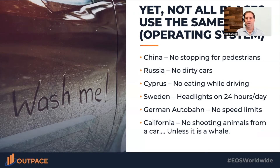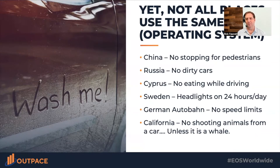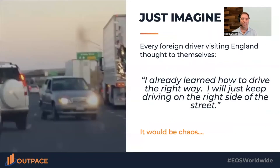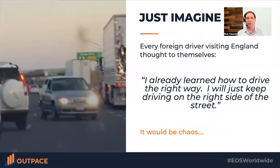Germany doesn't have speed limits — can you imagine driving in the United States without any speed limits? In California, there's a rule I think is kind of funny: you're not allowed to shoot animals from a car unless it's a whale. I don't know how many whales have been shot in California, but they had to create a law exempting it.